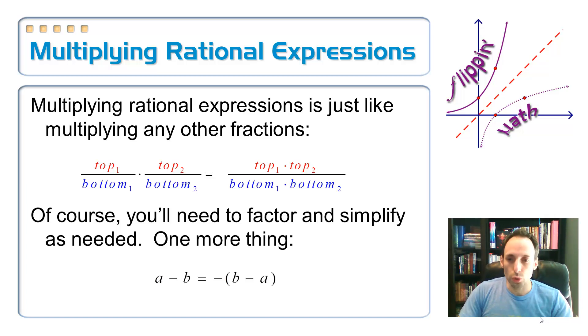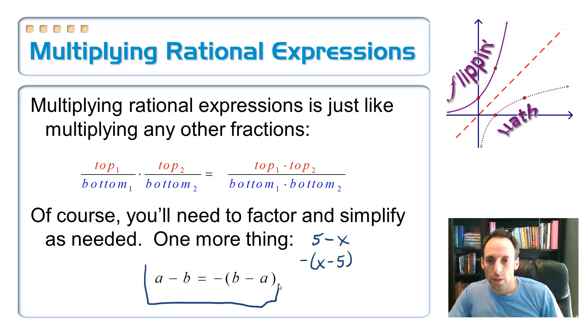Down at the bottom, I'm giving you one other thing to help you simplify. Sometimes when you go to simplify, you might have 5 minus x, but you wanted x minus 5. You can get it to look like x minus 5 by just factoring out the negative sign. Make that negative times x minus 5, and now they would cancel out and it would just leave a negative someplace at the top or the bottom. So if they're in the wrong order with subtraction, just factor out a negative and you can switch them around.